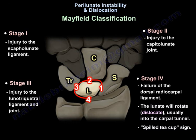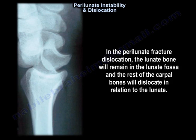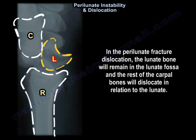The Mayfield classification shows the stages of perilunate instability. Stage 1: injury to the scapholunate ligament. Stage 2: injury to the capitolunate joint. Stage 3: injury to the lunotriquetral ligament and joint. Stage 4: failure of the dorsal radiocarpal ligament. In perilunate fracture dislocation, the lunate bone remains in the lunate fossa and the rest of the carpal bones dislocate in relation to the lunate.